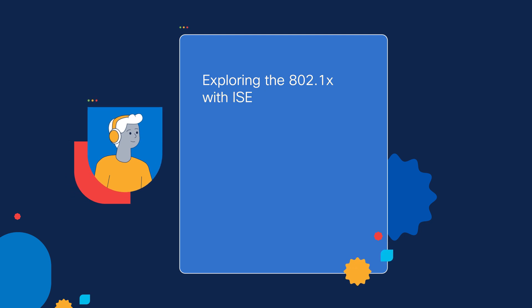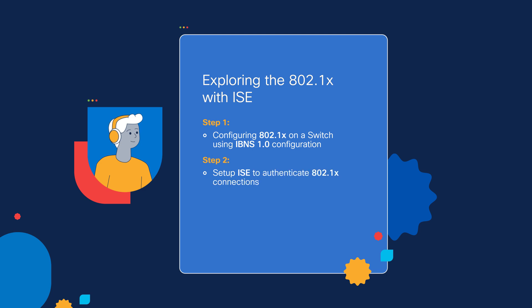In order to configure 802.1x with the ISE box, we will need to follow three steps. On step one, we will be configuring 802.1x on the switch using the IBNS 1.0 configuration. On step two, we will set up the ISE box to authenticate 802.1x connections and apply the access restrictions needed. On step three, we will verify the results using the logging.